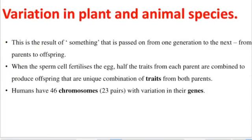This happens as a result of something that is passed on from one generation to the next, from parents to their offspring. When the sperm cell fertilizes the egg, half the traits from each parent are combined to produce offspring that have a unique combination of traits from both parents. A full human being has 46 chromosomes — 23 pairs inherited from the male parent and another 23 pairs inherited from the female parent.